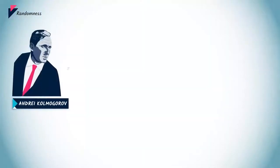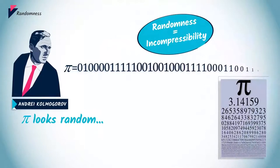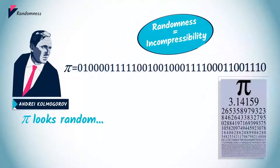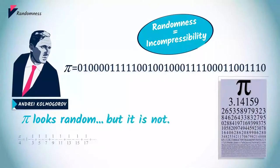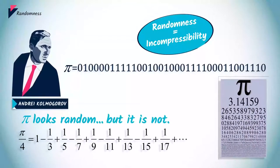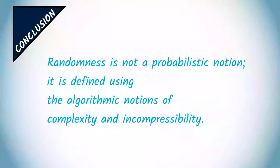It is easy to see that even if pi looks random, it is by no means random, as its Kolmogorov complexity is very small. In conclusion, randomness is not a probabilistic notion. It is defined using algorithmic notions of complexity and incompressibility.